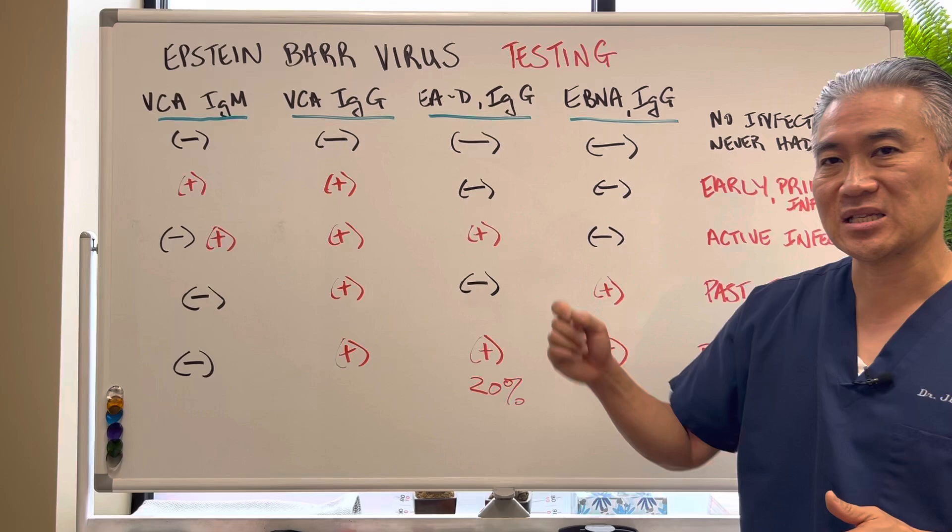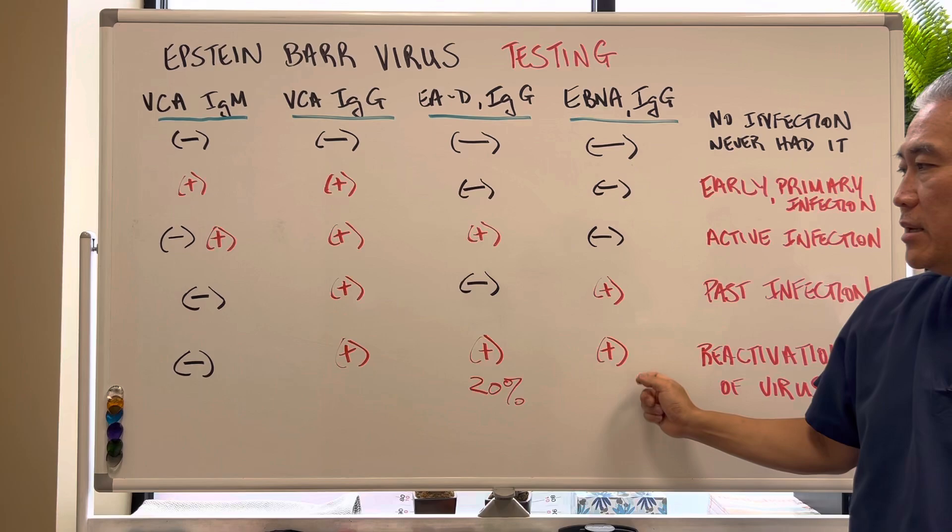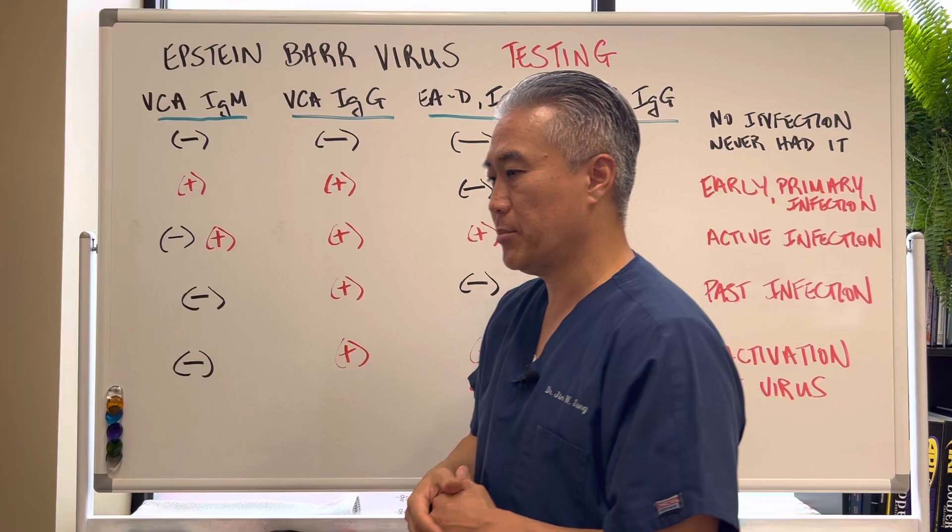So you have to look at the clinical signs and symptoms of someone who comes in to determine if they have a possible reactivation. If you're suspecting a reactivation, it's positive IgG, positive early antigen, and positive EBNA. When you have these three, you can possibly have a reactivation of the Epstein-Barr virus.